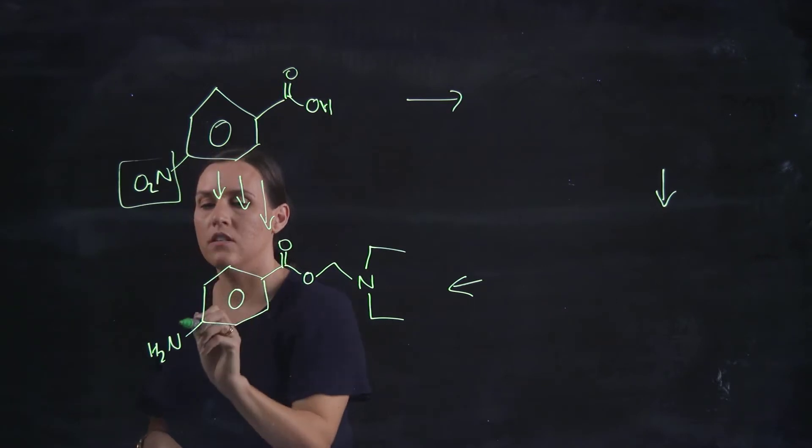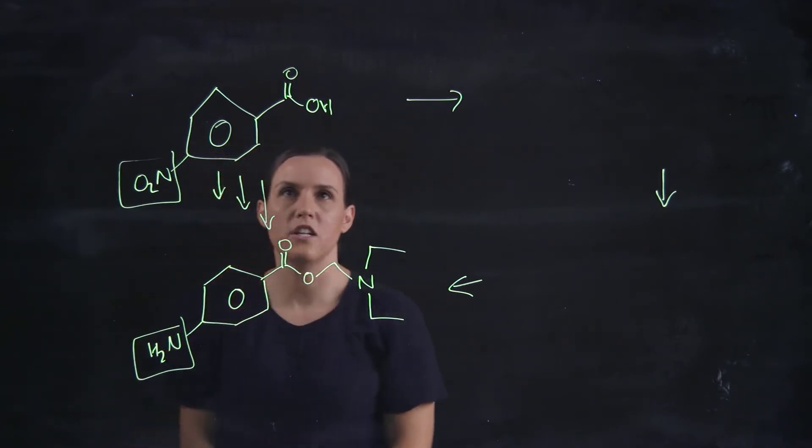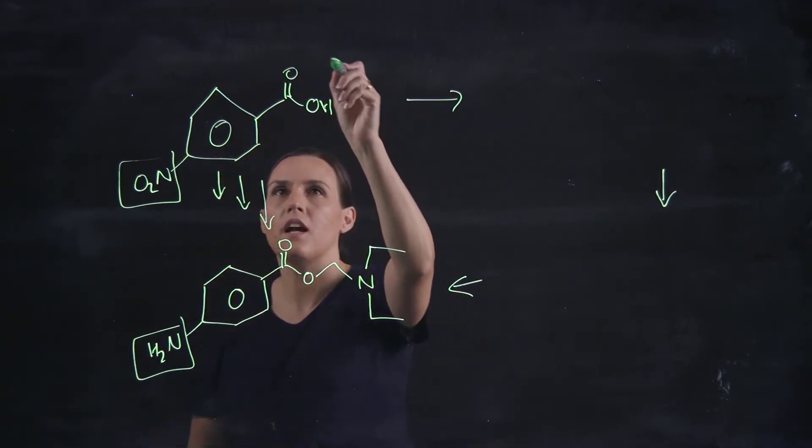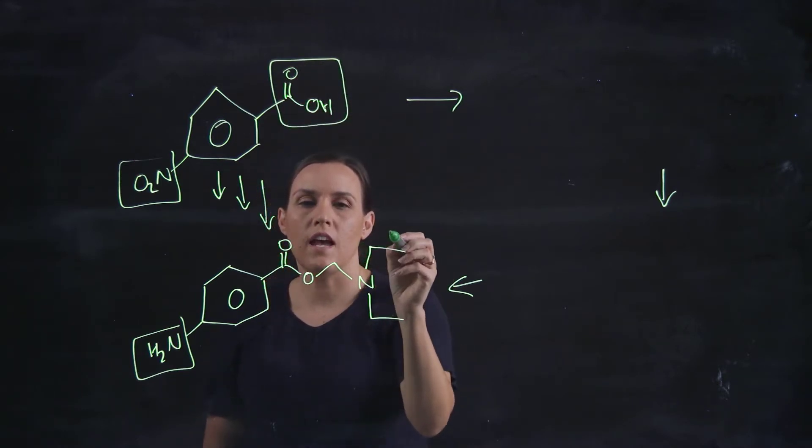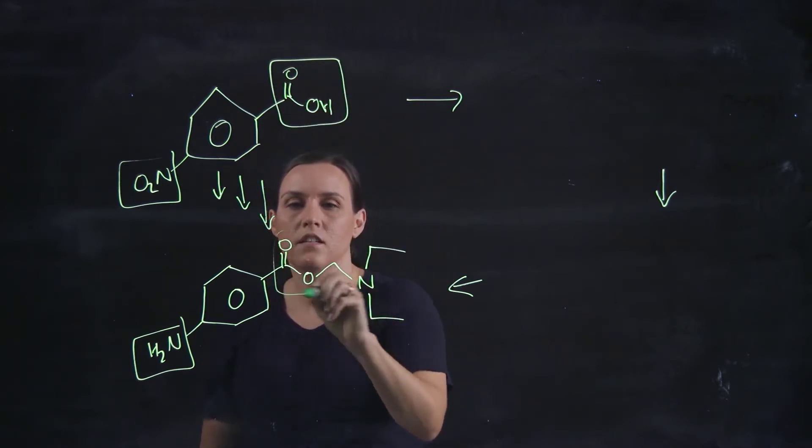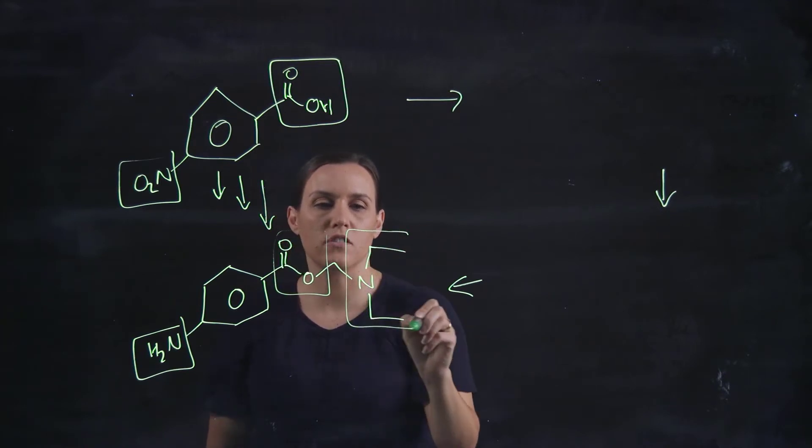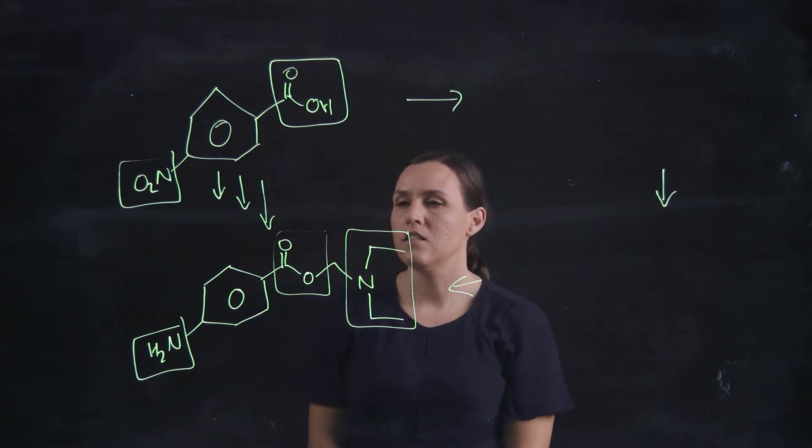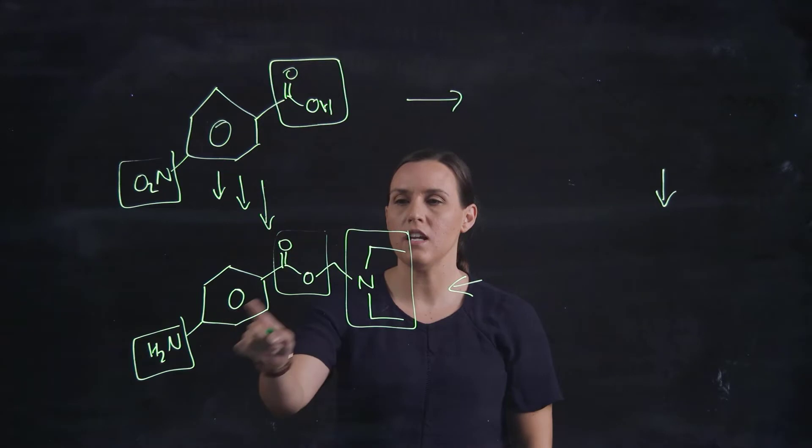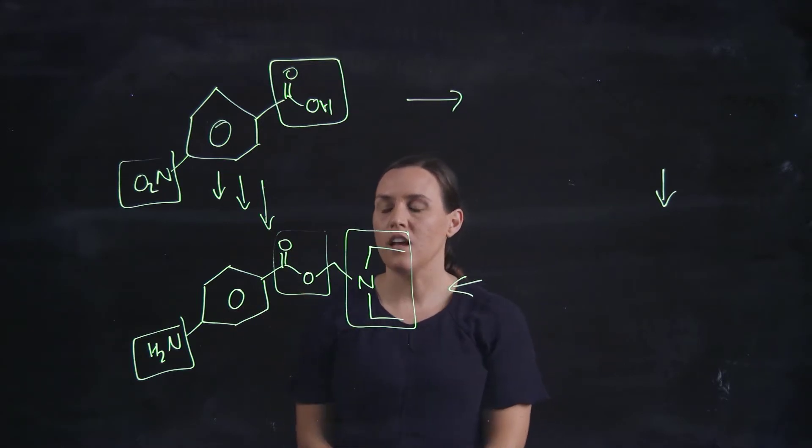NH2, so that's changed and we're going from a carboxylic acid into an ester that has a nitrogen group attached. So we can see that there are three changes that have happened between the starting reagent and our product.